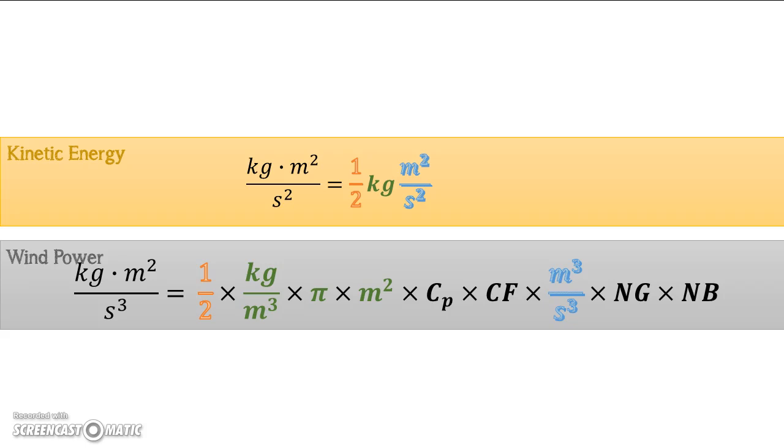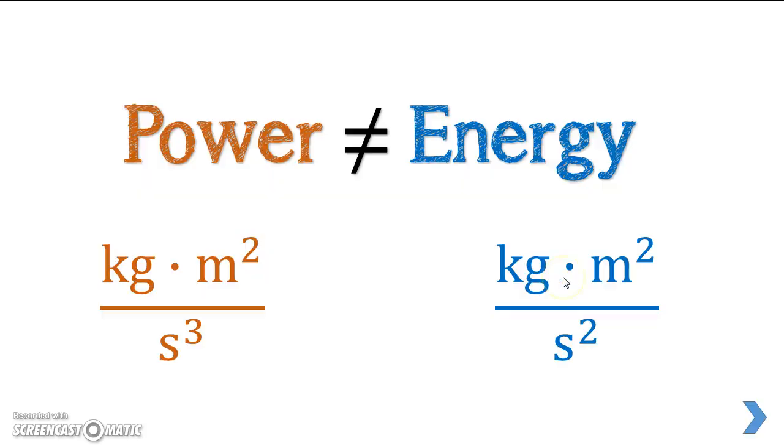So now we've expanded everything out. You may notice a major difference. So power has seconds cubed at the bottom. And energy has seconds squared at the bottom. So why would that be?